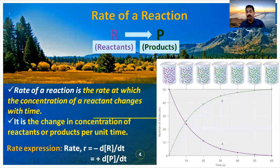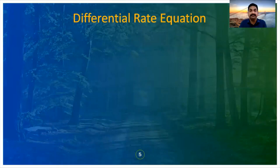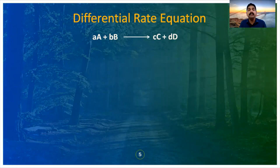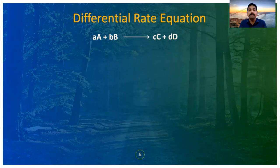Now let us see the differential rate equation. For this, we take the example: a moles of A and b moles of B reacting to form c moles of C and d moles of D. Here, capital letters are molecules and small letters are their respective mole quantities — A molecules are a moles, B molecules are b moles, C molecules are c moles, D molecules are d moles.